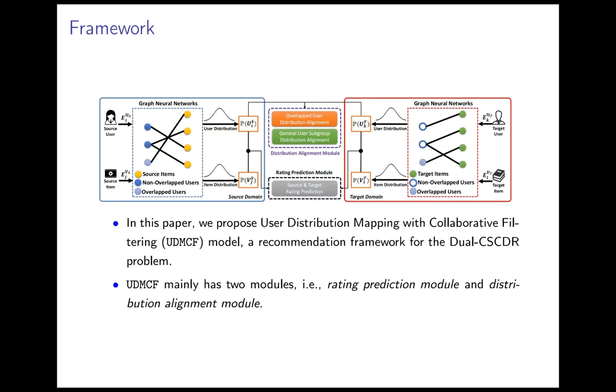We propose user distribution mapping with collaborative fitting, U-DMCF model, a recommendation framework for the Dual-CSCDR problem. We propose two modules: rating prediction model and distribution alignment model for better modeling user-item embeddings and transferring relevant information across domains.